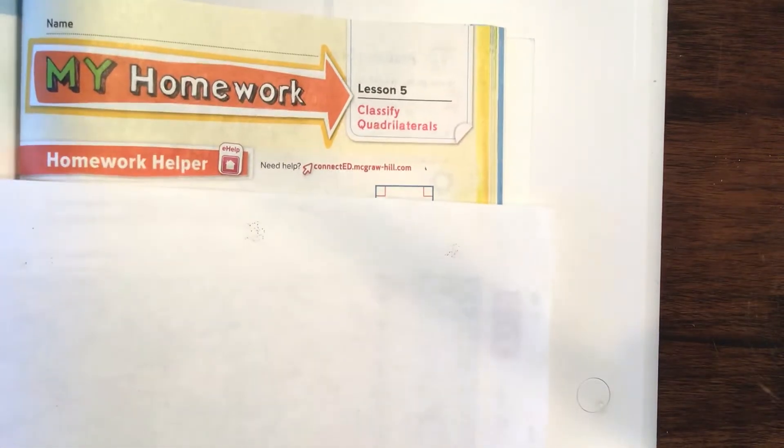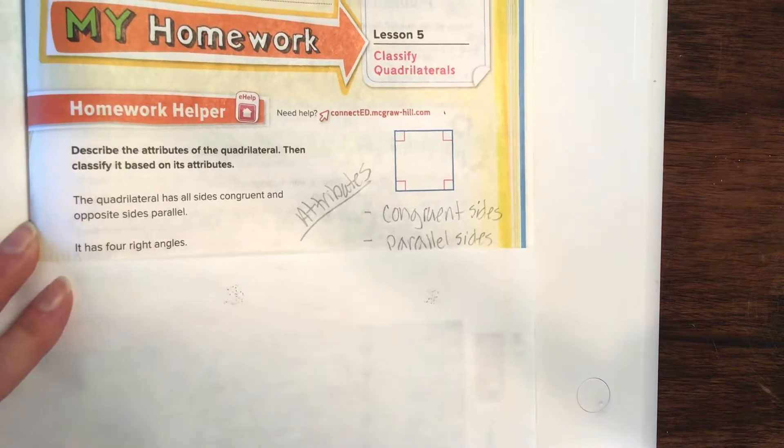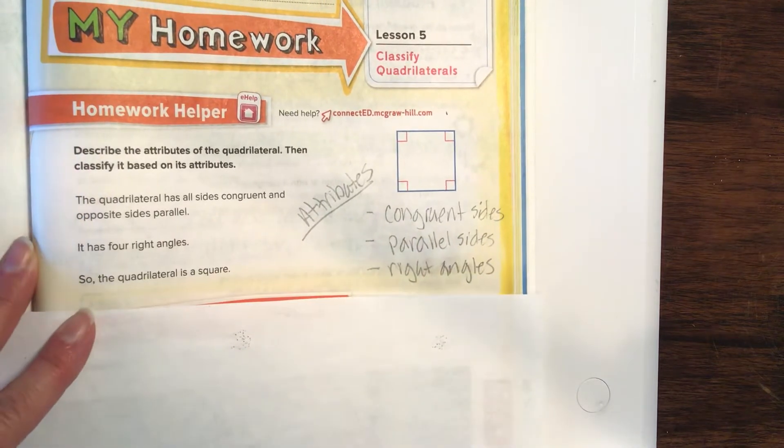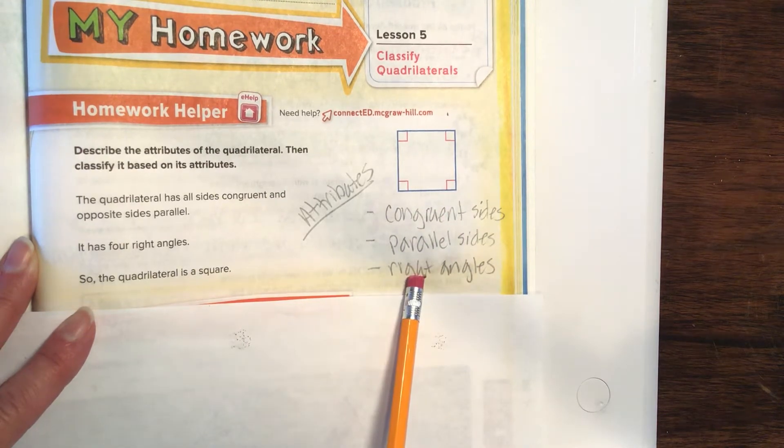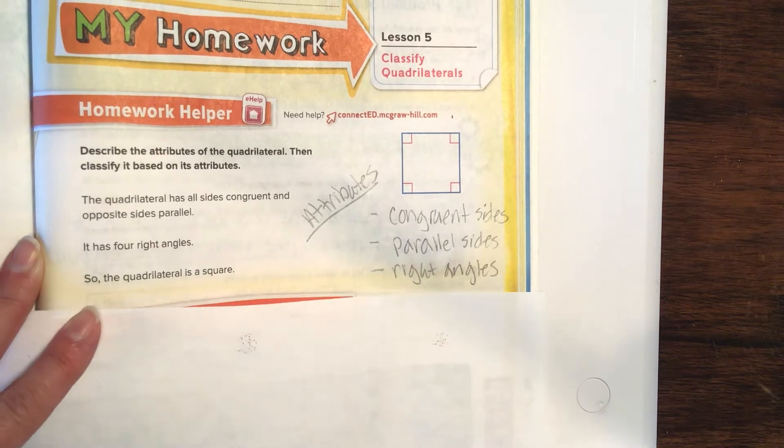We are talking about classifying quadrilaterals today. Remember, in the guided practice, there are three attributes we need to pay attention to: how many congruent sides, parallel sides, and right angles. Those are the attributes that are going to help us out today.